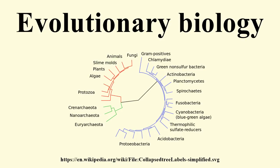Current research in evolutionary biology covers diverse topics, as should be expected given the centrality of evolution to understanding biology. Modern evolutionary biology incorporates ideas from diverse areas of science, such as molecular genetics and even computer science. These phenomena include speciation, the evolution of sexual reproduction, the evolution of cooperation, the evolution of aging, and evolvability.